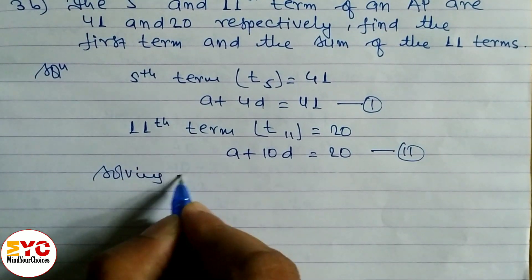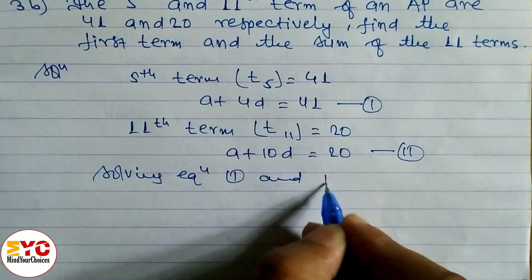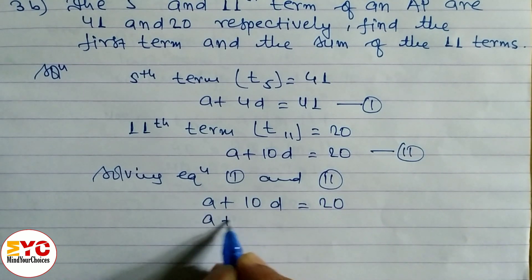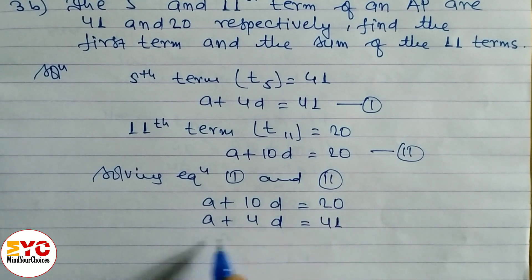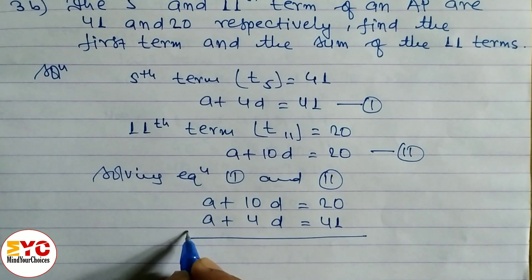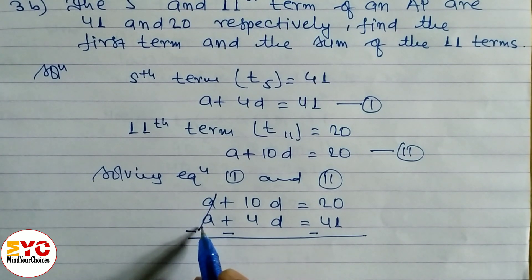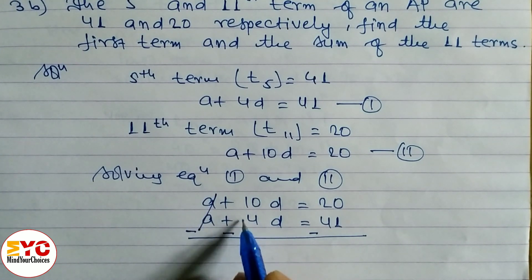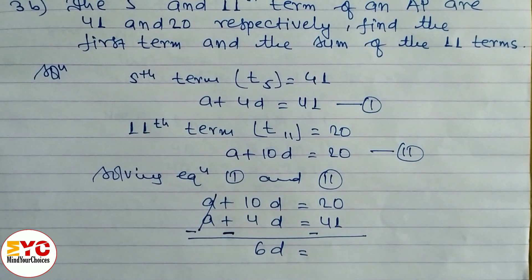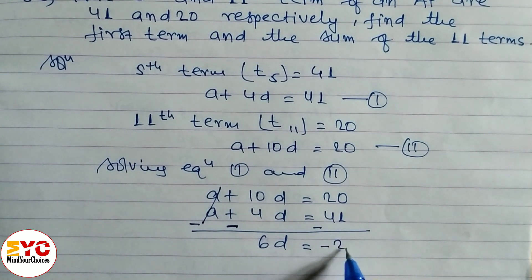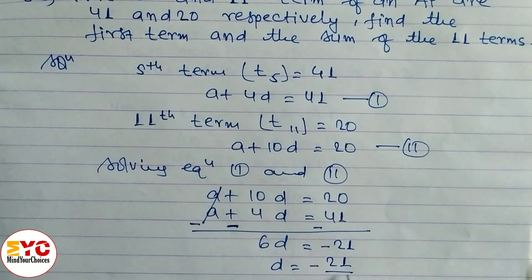Solving equations 1 and 2: A plus 10D equals 20, and A plus 4D equals 41. Using elimination, A and A cancel. The sign of 4D becomes negative, so 10 minus 4 gives 6D equals 20 minus 41, which is minus 21. So we write 6D equals minus 21, giving D equals minus 21 by 6.